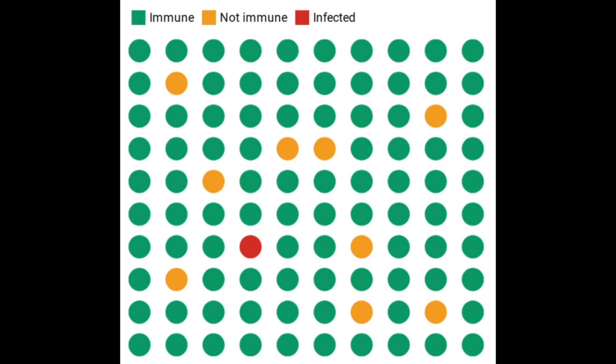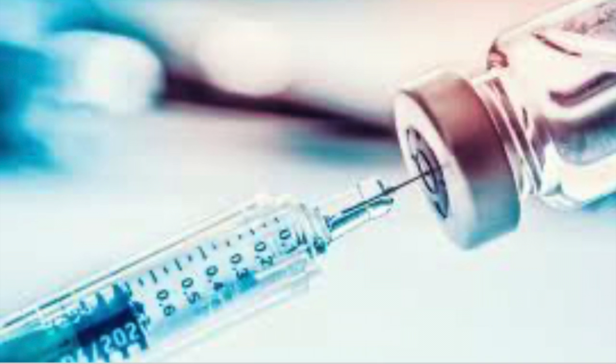Why is the vaccine market such a good example of positive externalities? This market failure runs across a broad spectrum, from vaccine development right through to administering the vaccine. Moreover, the more consumers demand a vaccine, the greater the benefits to society. Epidemiologists call this herd immunity, which can be achieved when at least 50% of the population has either had the disease or is immunized against it. Vaccines take a long time and a lot of money to develop and are complex and costly to produce.